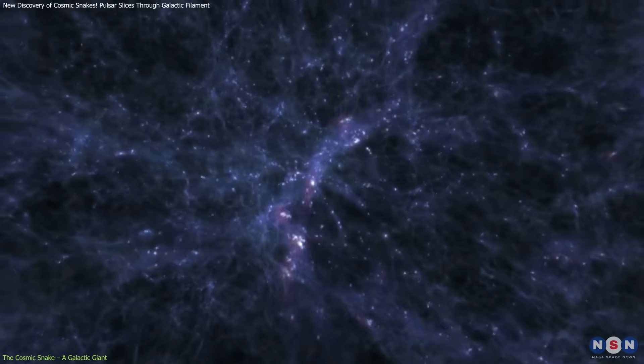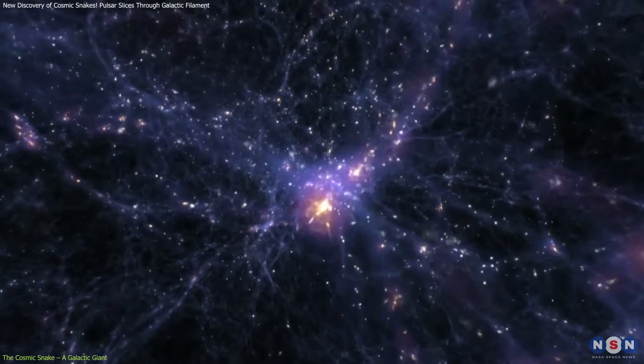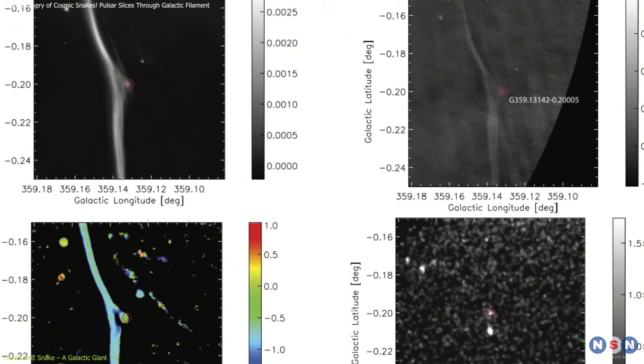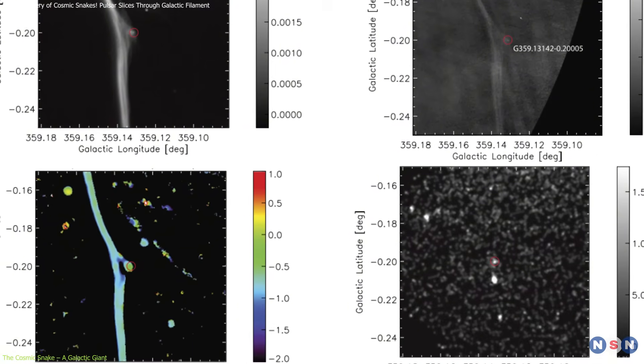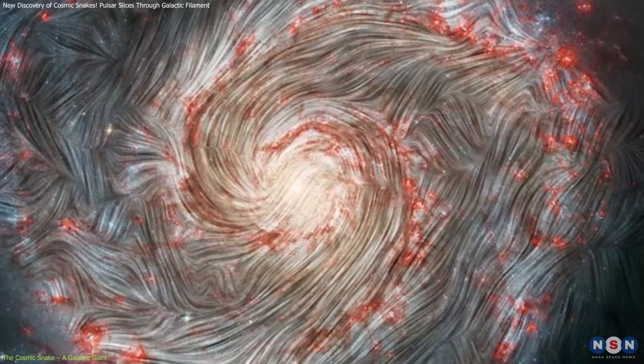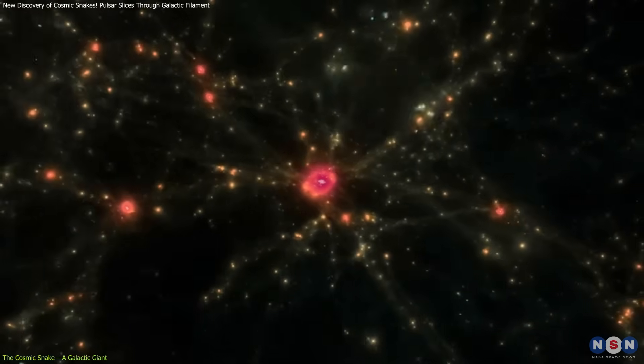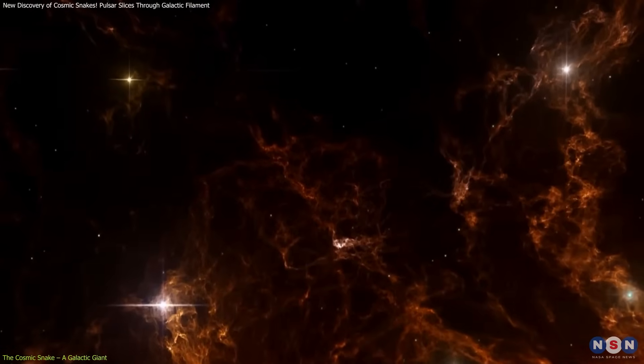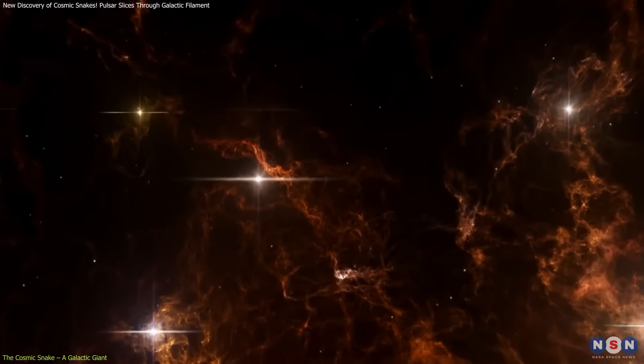One factor that holds the filament together and influences its evolution is the galactic magnetic field. Observations show that the Cosmic Snake aligns closely with these invisible field lines, which act as scaffolding across the galaxy. Magnetic fields support the filament's shape and may even regulate the rate of star formation by resisting gravitational collapse.